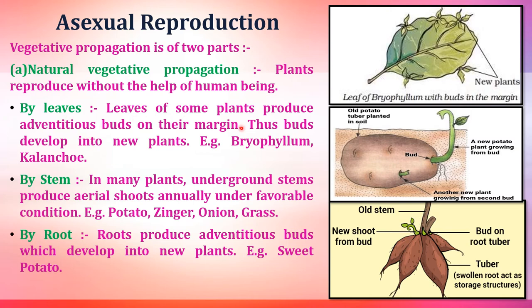In natural vegetative propagation: leaves of some plants like bryophyllum produce adventitious buds on their margins, and these buds develop into new plants. In many plants, underground stems produce aerial shoots annually under favorable conditions, which when cut and grown form new plants. Roots also produce adventitious buds which develop into new plants. This is natural vegetative propagation.